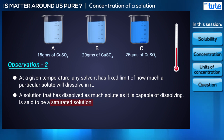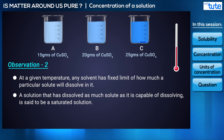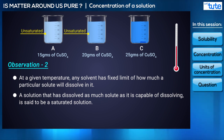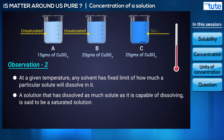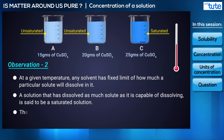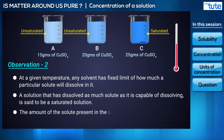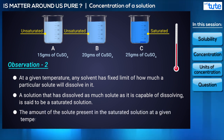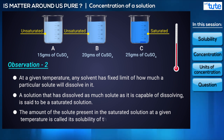After a solution becomes saturated, no more solute will dissolve at that given temperature. Thus, solutions in beakers A and B are unsaturated — meaning you can further add solute and it will dissolve — while the solution in C is saturated, meaning it can take no more solute. The amount of solute present in a saturated solution at a given temperature is called the solubility of the solvent.